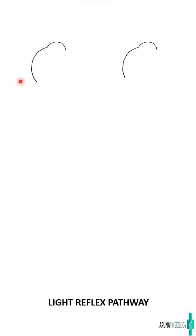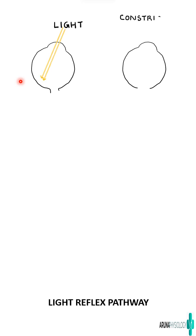We know that when light falls on one eye it causes constriction of the pupil not only of that eye but also of the other eye. How? That is because of the light reflex pathway.